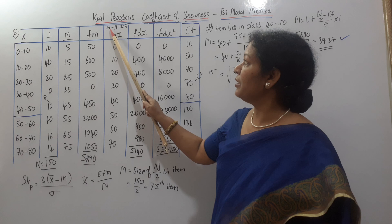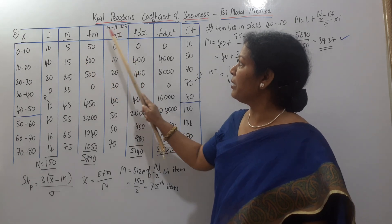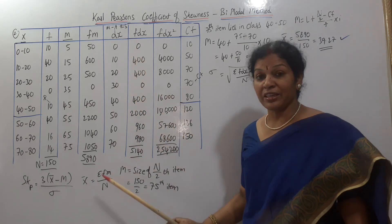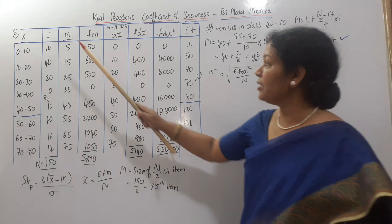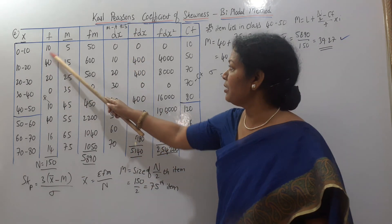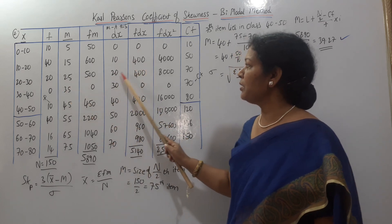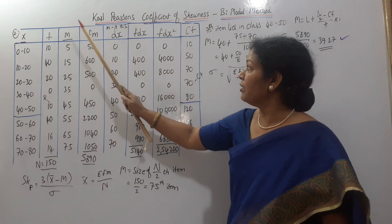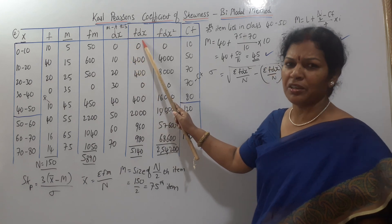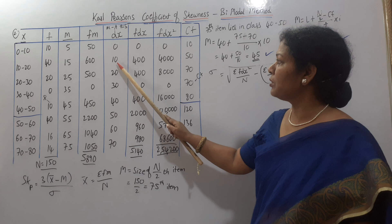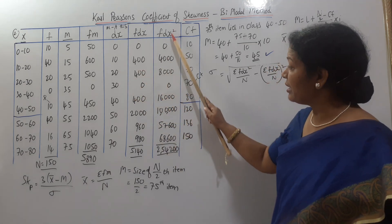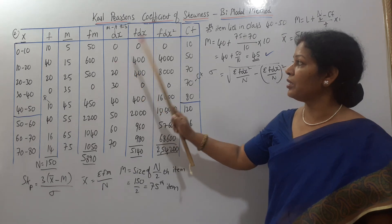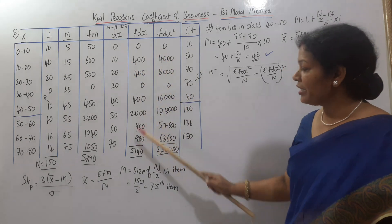Calculating dx: 5−5=0, 15−5=10, 25−5=20, 35−5=30, and so on. Then fdx = f × dx: 10×0=0, 40×10=400, 20×20=400, and so on. Then fdx² = dx × fdx: 0×0=0, 10×400=4000, 20×400=8000, and so on. The totals needed are: Σfdx = 5140, and Σfdx² = 2,54,200.